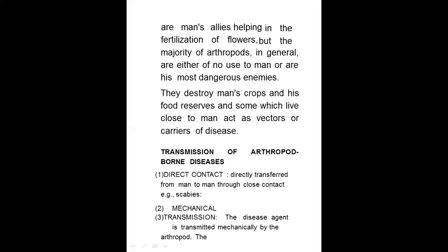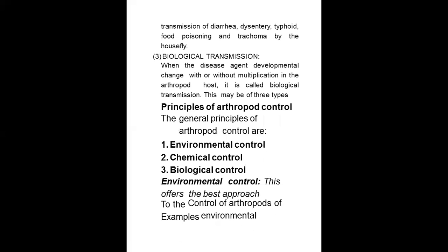Mechanical transmission: the disease agent is transmitted mechanically by the arthropods. For example, the transmission of diarrhea, dysentery, typhoid, food poisoning and trachoma by the house fly. Biological transmission: when the disease agent undergoes development changes with or without multiplication in the arthropod host, it is called biological transmission. This may be of three types.